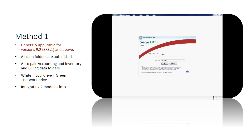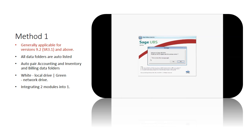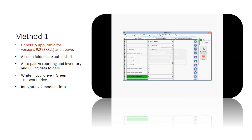If you are currently using version 9.2 SR3.1 and above, you can migrate data into Sage UBS 2015 using this method. When you start Sage UBS 2015, it will ask if you would like to migrate data from previous versions. Select Yes.